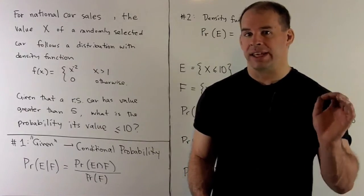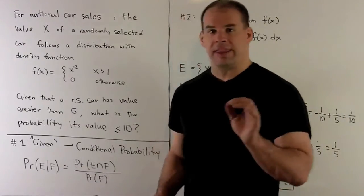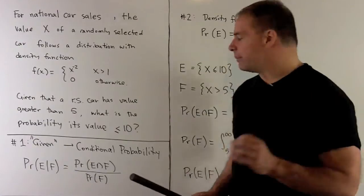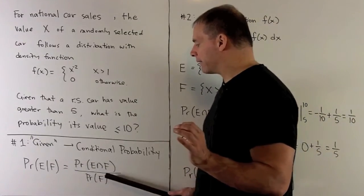If I have two events, E and F, the probability of event E happening given that F occurs is gonna be given by the probability of E intersect F divided by the probability of F.